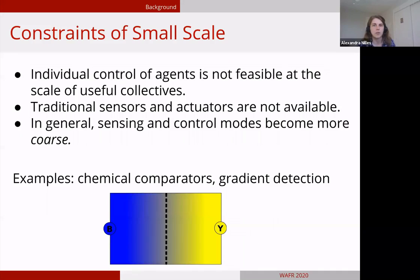I'll talk about the constraints of the small scale on the kinds of assumptions we can make on sensing and actuation. Individual control is not necessarily feasible. They need to be able to react locally. Traditional sensors and actuators are not available. And in general, our sensing and control gets a lot more coarse at the small scale. Things might happen by regions instead of at specific points.